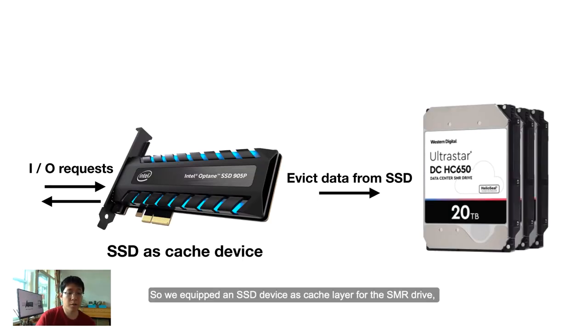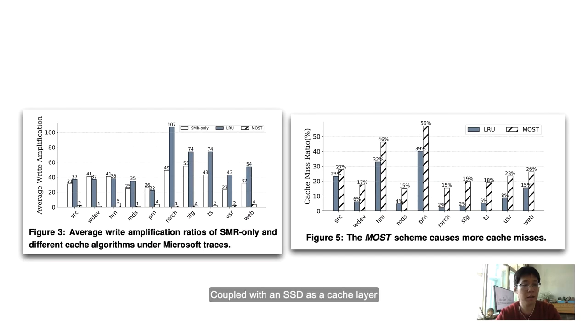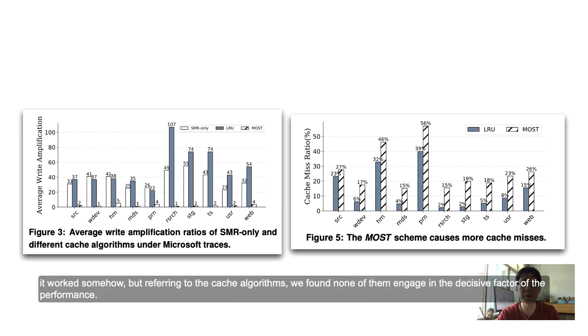So we equipped the SSD device as a cache layer for the SMR drive, trying to boost the random accesses, but we had some problems. Now let me show you the paths we've been through. Coupled with an SSD as a cache layer, it works somehow, but referring to the cache algorithm, we found none of them can engage the decisive factor of performance.